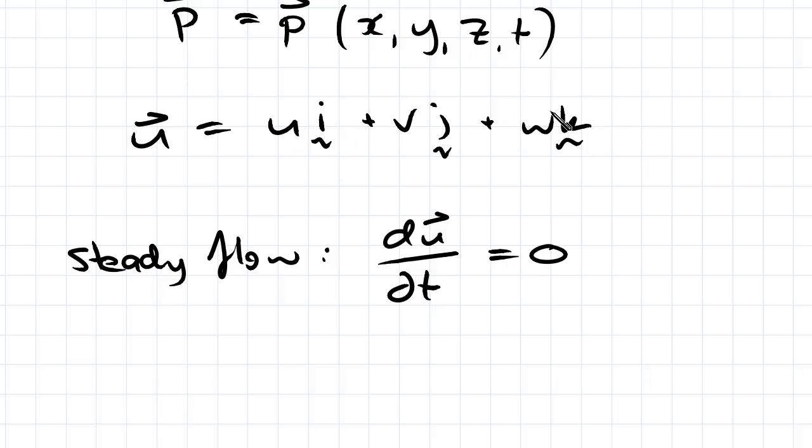If one of these equals zero, say the w component equals zero, then we have a two-dimensional flow. Same thing for a one-dimensional flow when we only have one direction of velocity where the other two are zero. This case applies to everything because it has the capabilities for three-dimensional flow, and you just set each component to zero depending on whether it's a one, two, or three-dimensional flow.